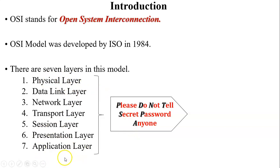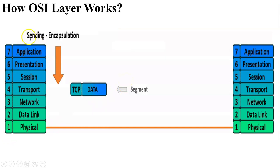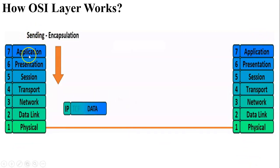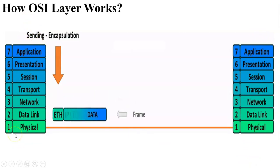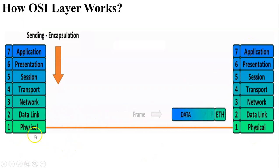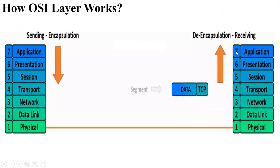The physical layer is the farthest layer from the user, and the application layer is the nearest layer to the user. Now I will show you an animation of how the OSI layers work. On the left hand side is the sender side and on the right hand side is the receiver side. At the sender side, the encapsulation process is done, and at the receiver side, the de-encapsulation process is done. After de-encapsulation, the receiver receives the original data.